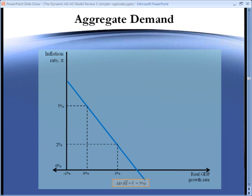And it can be read as follows. Imagine, for example, that nominal spending is growing at 5% and the real growth rate is 3%. As a result, the inflation rate must be 2%.